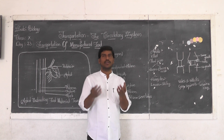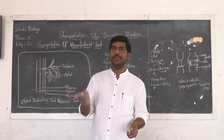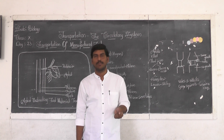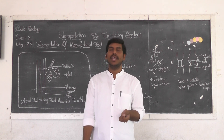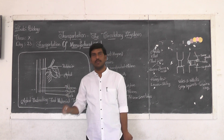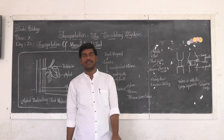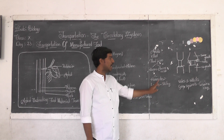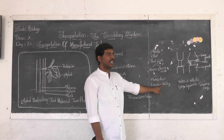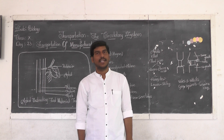Phloem helps in transportation of manufactured food material. Whatever amount of food is taken by the aphids, the complete food material is not assimilated. Assimilation — as we studied in the topic of nutrition — refers to the nutrients absorbed for energy requirements. The complete amount taken is not assimilated, so some amount of sugar is excreted by these aphids. The sugar substances excreted by aphids are called honeydew. This honeydew is excreted on the leaves visited by the aphids, making the leaves sticky.